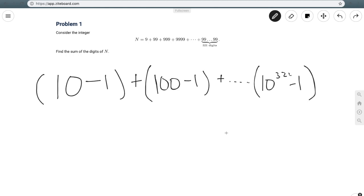And then the very last number is going to be 10 to the power of 322 minus 1, and it's 322 because when I subtract, there'll be 321 nines.